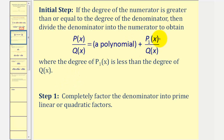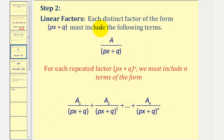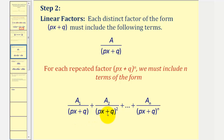Once the degree of the numerator is less than the degree of the denominator, we can perform partial fraction decomposition. For step one, we completely factor the denominator into prime linear and quadratic factors. For step two, for every distinct linear factor we must include a fraction where the numerator is an unknown constant and the denominator is that linear factor. For repeated linear factors with n repetitions, we must include n terms, where each fraction picks up one additional repeated linear factor.